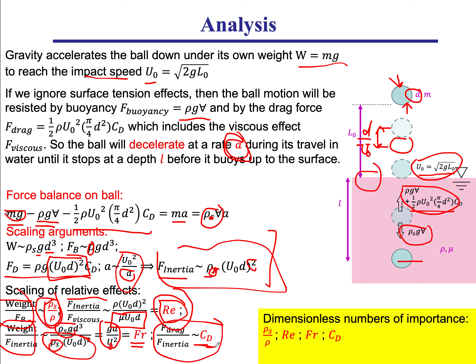There are other dimensionless numbers in similar problems, such as when surface tension is important — relevant for very small spheres — or when gas pressure is variable. We are going to ignore those and keep our problem limited to these four control dimensionless numbers.